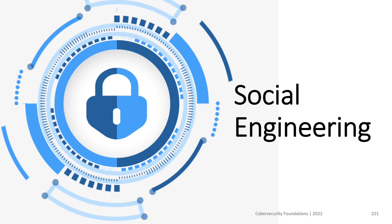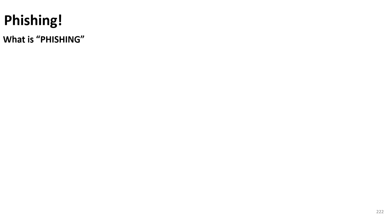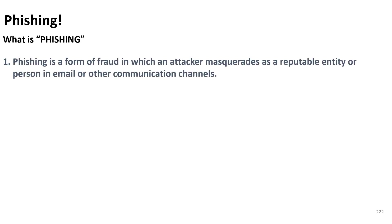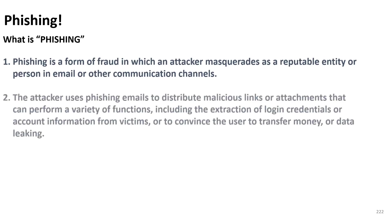Social engineering refers to attacks or techniques that target the human factor in the security program. The most common type is phishing — an email considered a form of fraud, delivered by someone pretending to be a large entity or someone important. The attacker uses email as the communication medium to distribute malicious code, malicious links, or to harvest data from the victim.